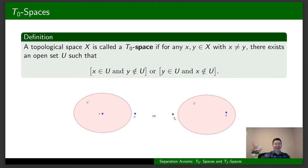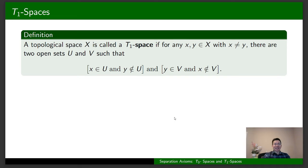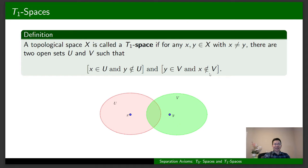Then X is a D0 space. Next, a topological space X is called a D1 space if for any two distinct elements x and y, there are two open sets U and V such that x belongs to U and y doesn't belong to U, and y belongs to V and x doesn't belong to V. Let's look at another figure to understand this property.